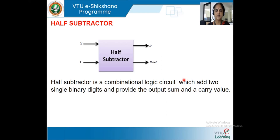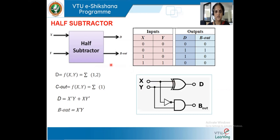The next topic is the subtractor. A subtractor is a circuit that finds the difference between two input signals. It finds the difference between two binary digits and provides the difference and borrow outputs. With two inputs X and Y, there are four combinations. When both are zero, difference is zero. When subtracting 1 from 0, we get a borrow. The equation for D is D = X̄Y + XȲ, and B_out = X̄Y.